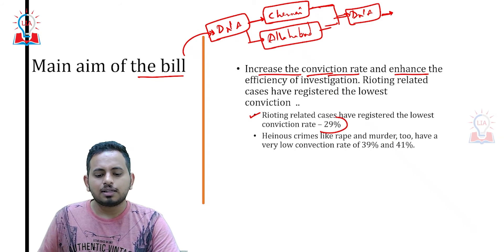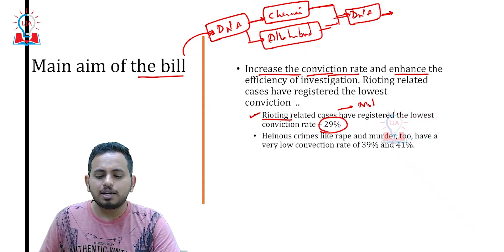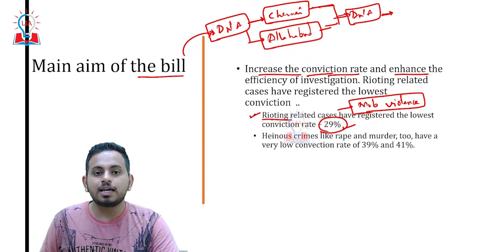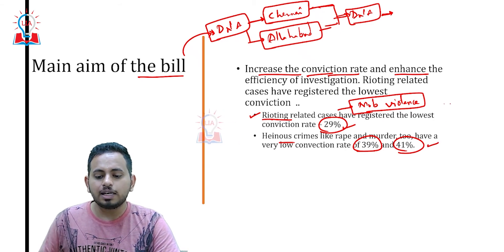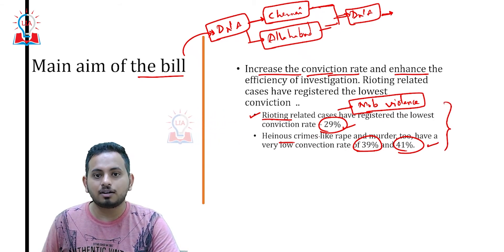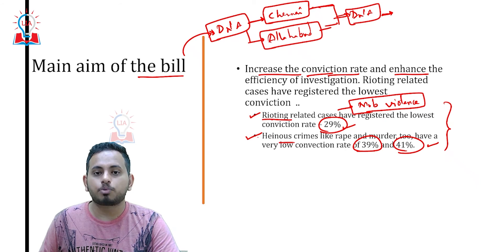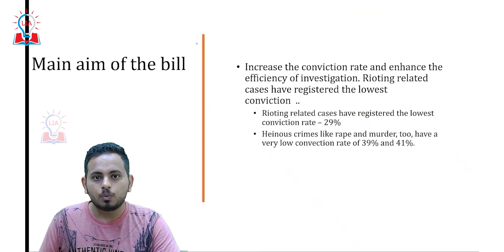For example, the conviction rate for rioting-related cases — including mob lynchings and mob violence — is as low as 29 percent. When it comes to heinous crimes like murder and rape, conviction rates are really low at 39 percent and 41 percent respectively. In order to increase conviction rates, create deterrence, and fast-track the investigative and judicial process, this particular amendment bill will help a lot.